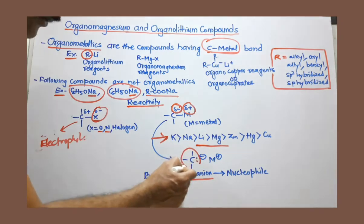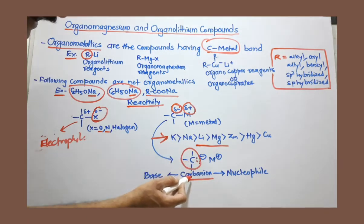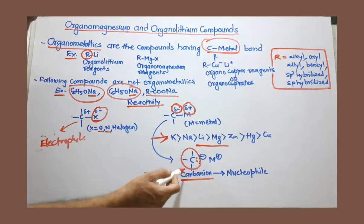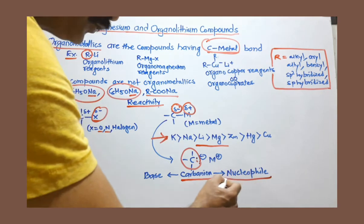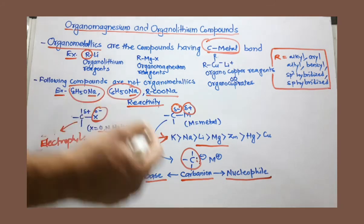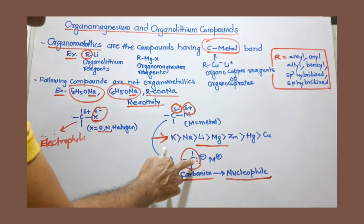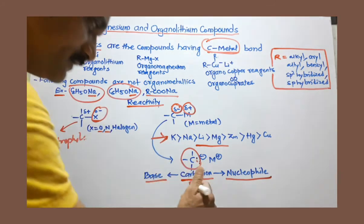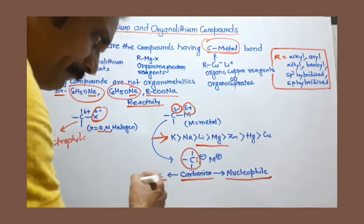That means this carbon is negative. If this carbon is negative, this is called carbanion. And this carbanion is now acting either as a nucleophile or a base, depending on the other species present in the reaction medium. So this carbanion is now acting as a nucleophile or a base.